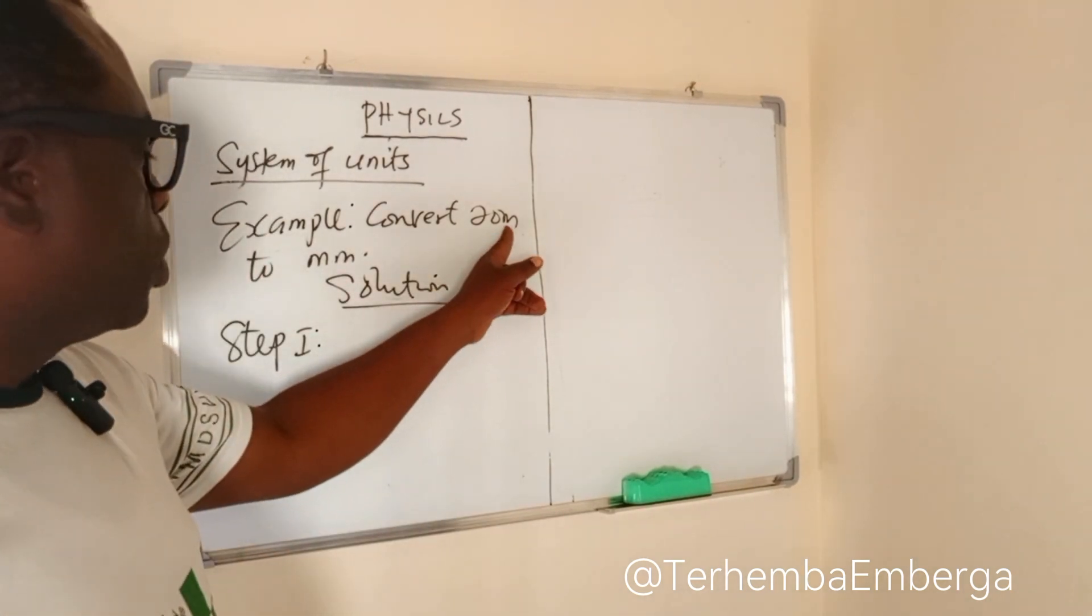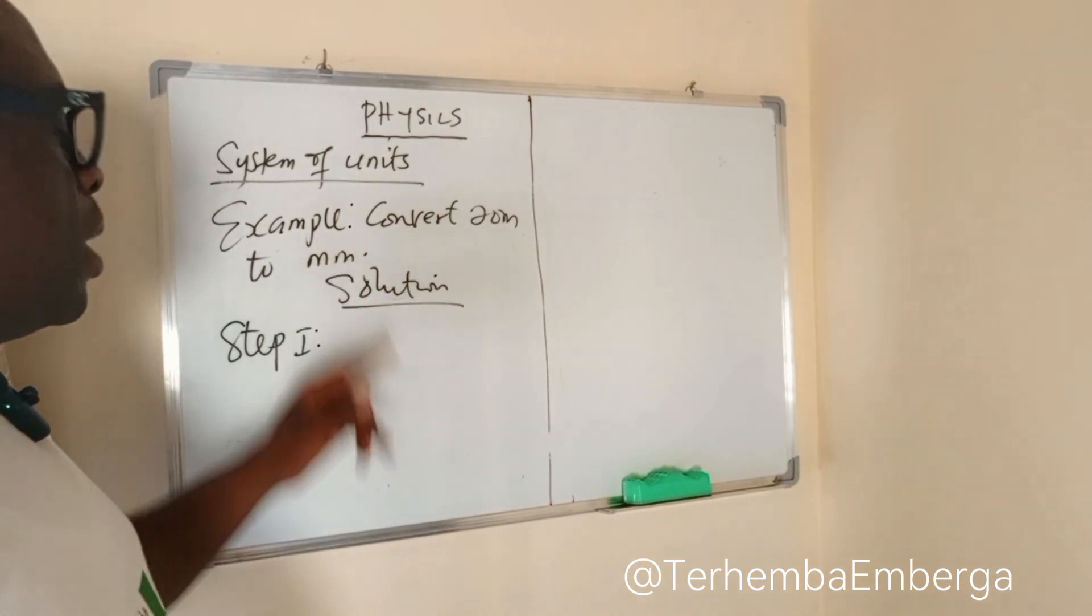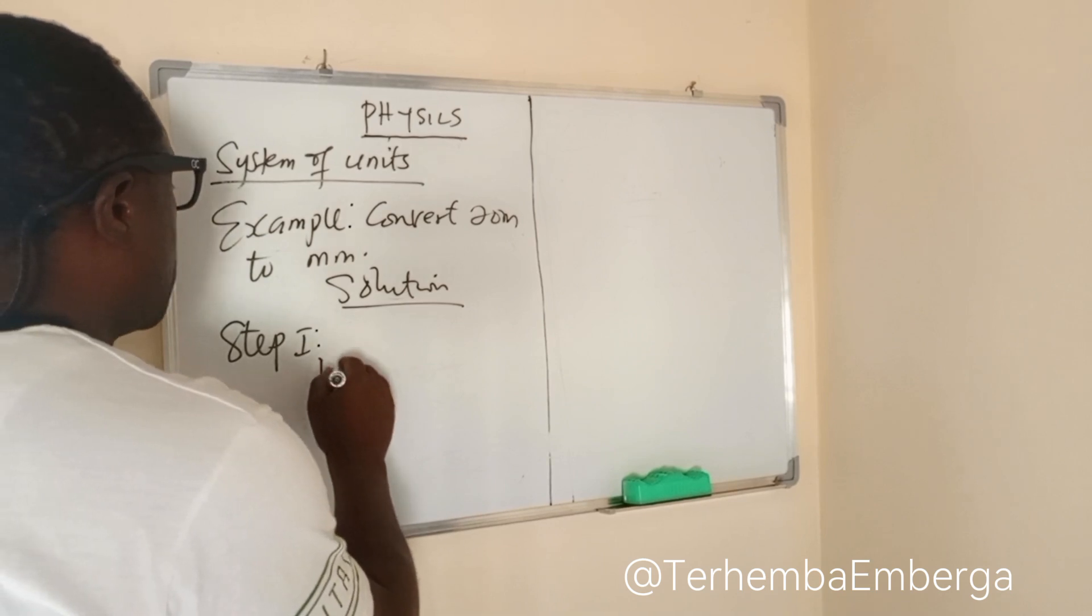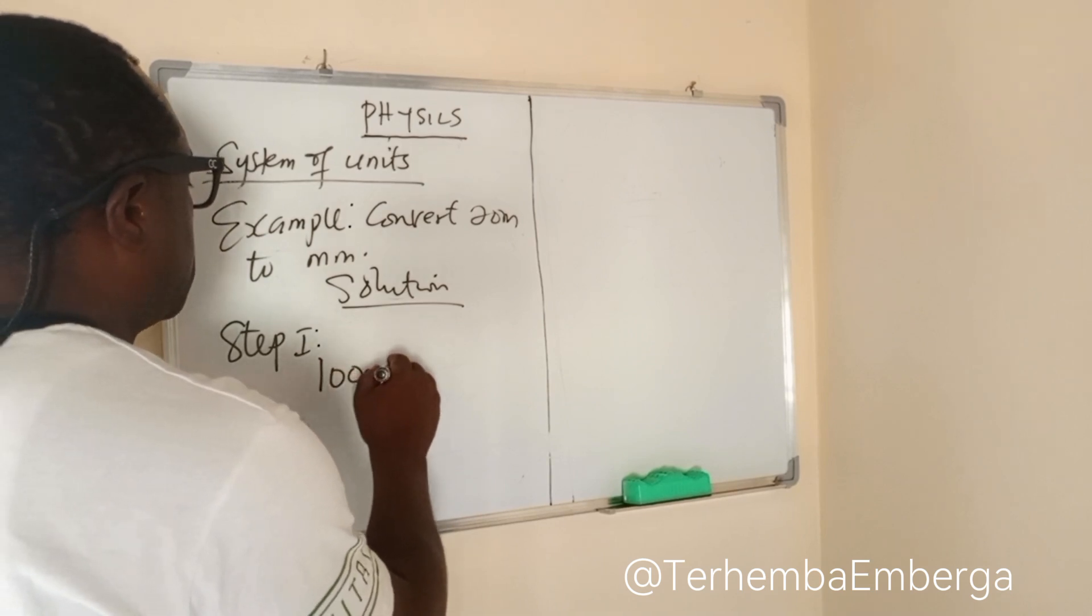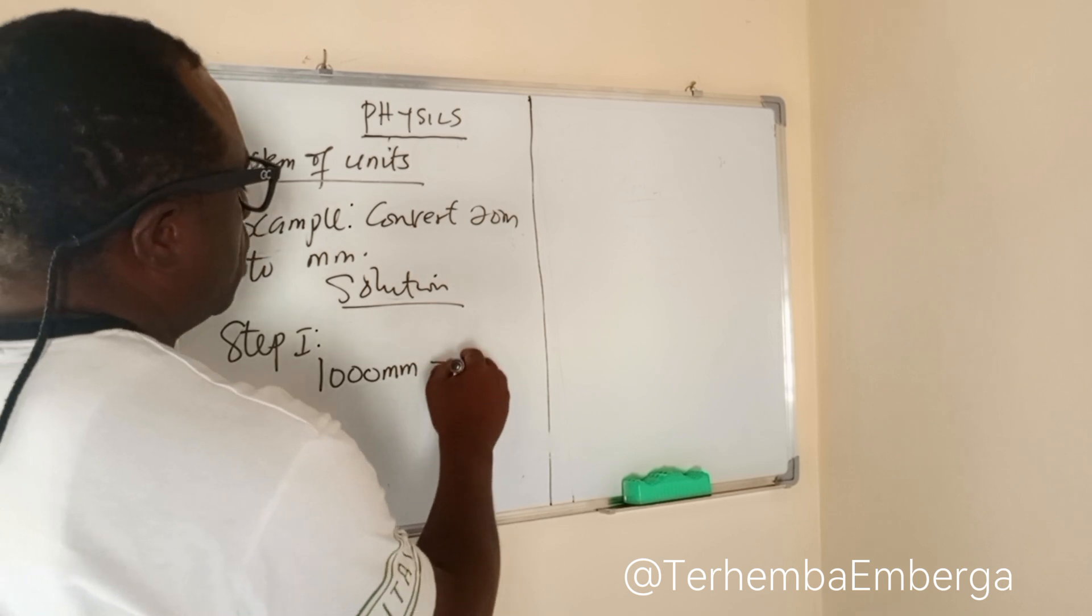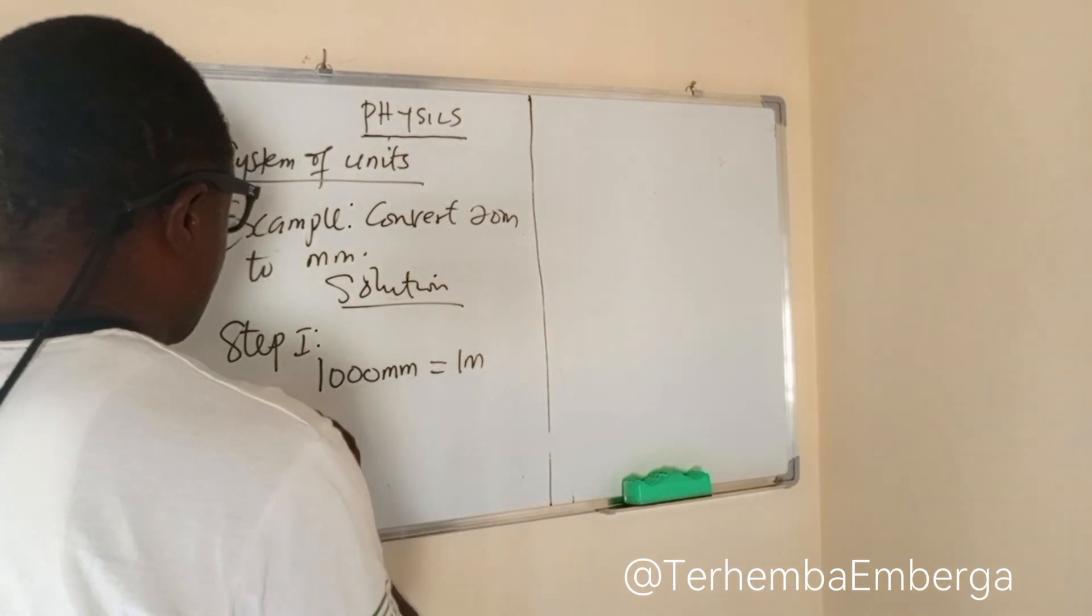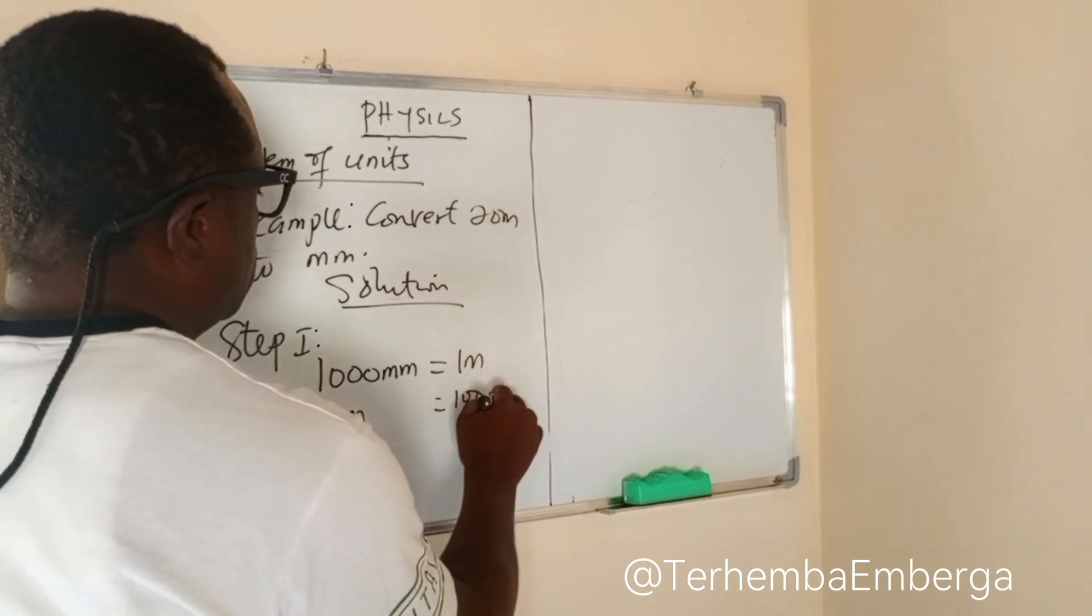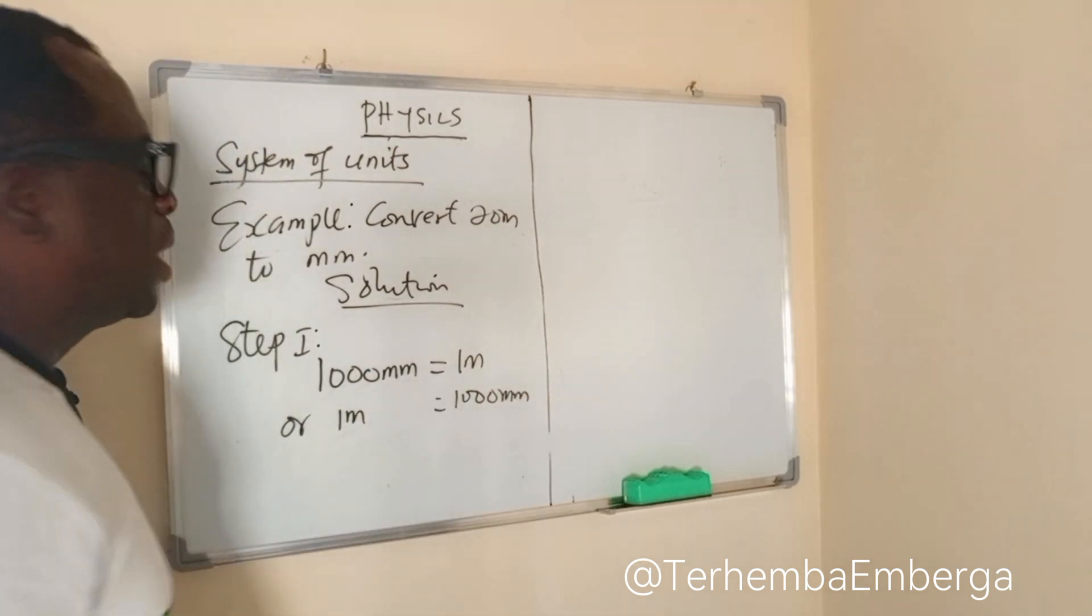You need to know the relationship between meters and millimeters. And the answer is 1,000 millimeters is equivalent to 1 meter. Or 1 meter is equivalent to 1,000 millimeters. That's the first step.